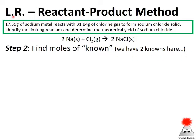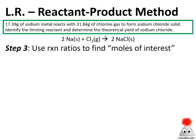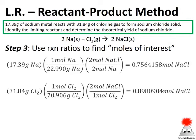Step two: find moles of the known quantities. In this case we know two things because it's a limiting reactant problem — we know how much sodium there is and how much chlorine there is. So I'm going to go ahead and do both of them. Our knowns are both sodium and chlorine gas.